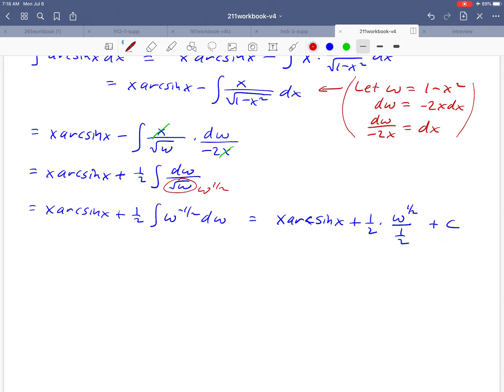And notice, something kind of interesting happens here. We get a 1 half in the numerator and the denominator. Those actually cancel. And one more step here. We'll go ahead and fill in what the w is. What was w equal to? Well, we see that up here. It's 1 minus x squared. And so we get an antiderivative that looks like that.